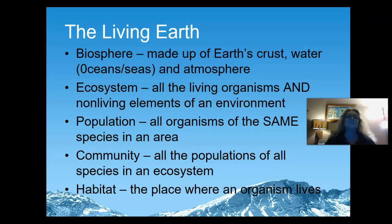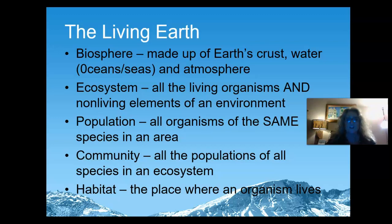A community is a group of different populations that all live in the same ecosystem. So for example, you've got a population of water snakes, a population of crickets, a population of frogs, a population of water striders — all living in the same ecosystem near a body of water. So they're a community together, they're interacting together. And habitat is where all those organisms live.